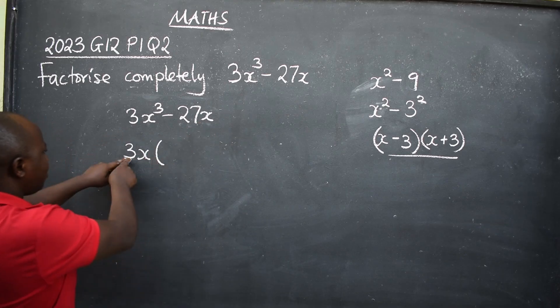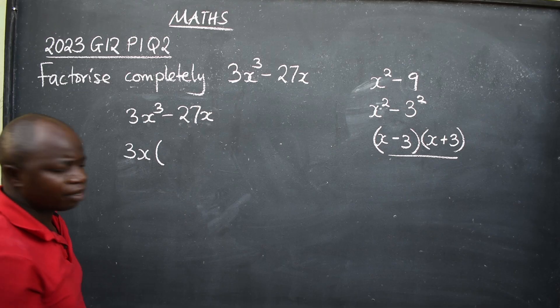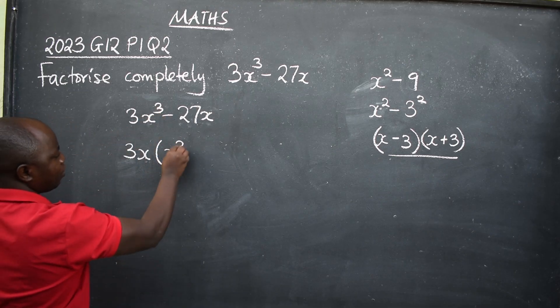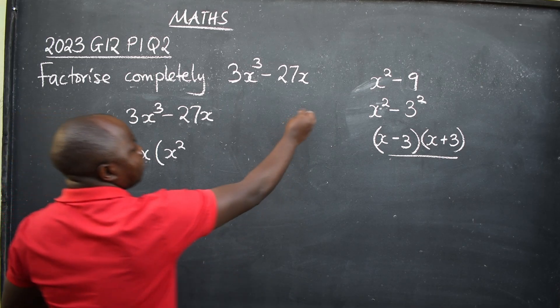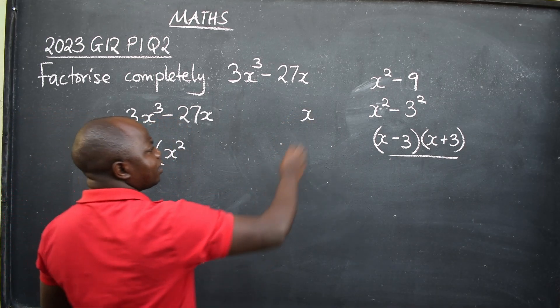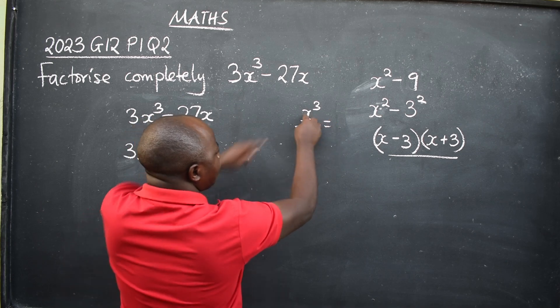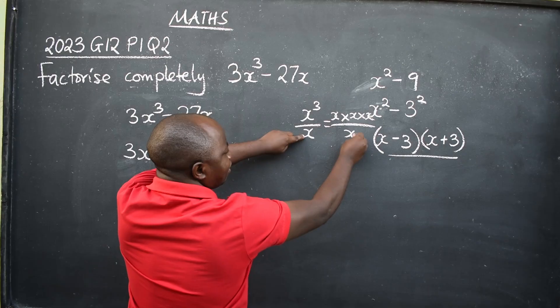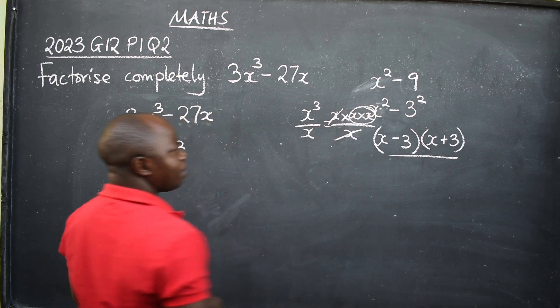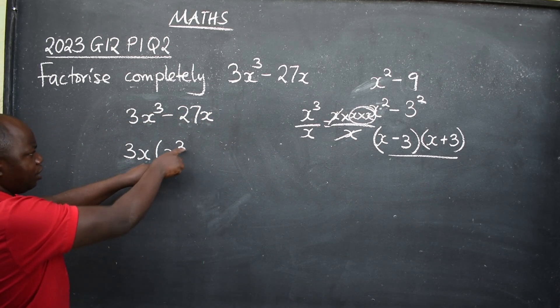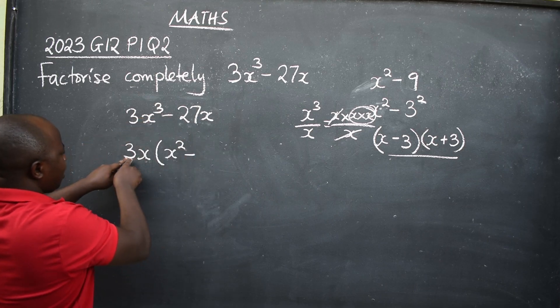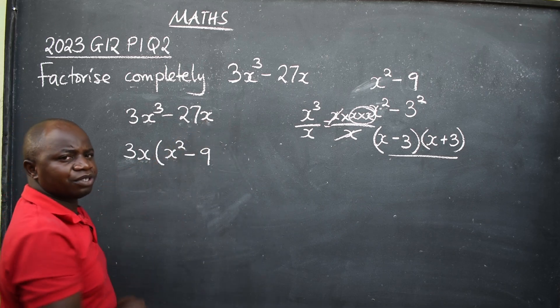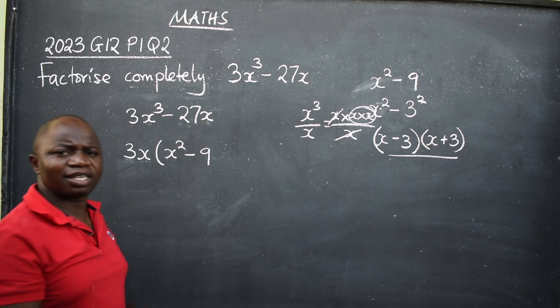You do this. How many 3s are in 3? One. How many x are in x³? It will be x². Why? You are dividing. We are saying x³ divided by x. On top here, it's the same as saying x times x times x. Here, you only have 1x. You cancel this, you are going to remain with x². Minus, how many 3s are in 27? There are 9 of them. This x has already been used, so you don't have to write that x again. You close.